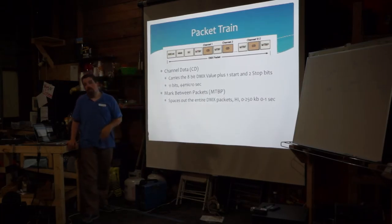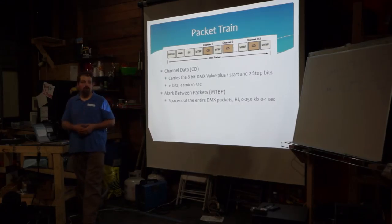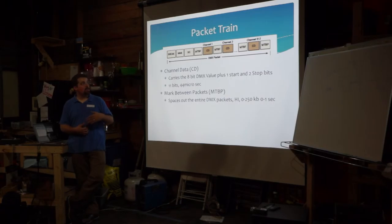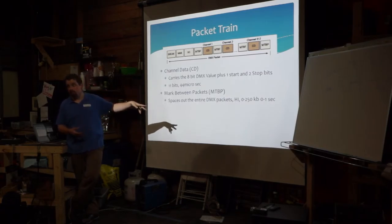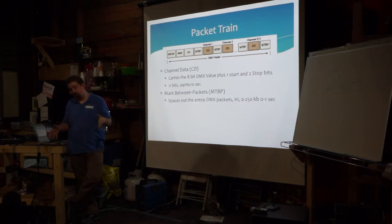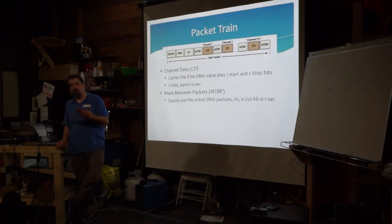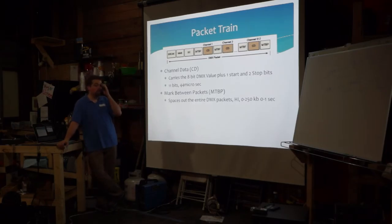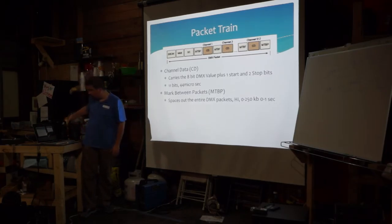There is a lot of variability in timing between the marks and breaks because when the original design came out, processors were very weak and could not maintain enough signal transfer at speed. So they spaced it out and gave plenty of room. They used something called hold-last-look presence — where the signal is lost or miscommunicated, devices maintain that same signal until a new proper packet comes by, which happens 44 times a second.